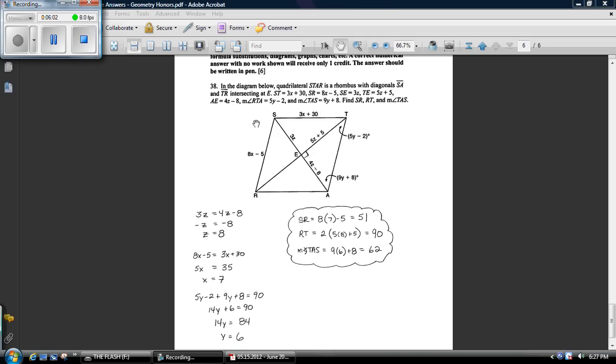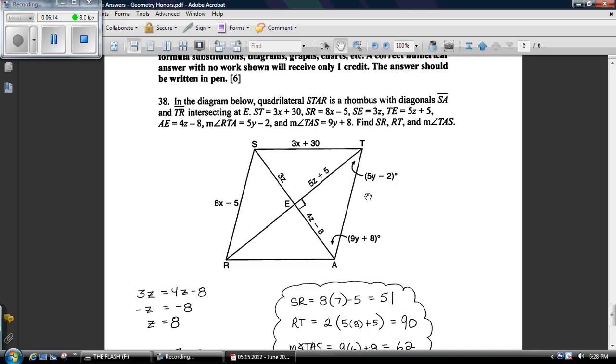Now a rhombus has congruent sides, which means that three x plus 30 equals eight x minus five. Solve it out, x is equal to seven. Here's the tricky part. Let's zoom in a little bit so you can see this.